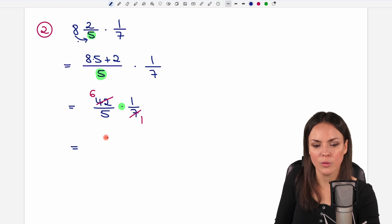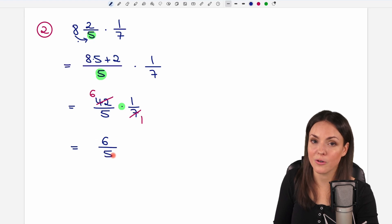6 times 1 equals 6. And on the bottom, 5 times 1 equals 5. This is our result again, but now we convert this again into a mixed fraction.